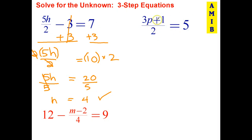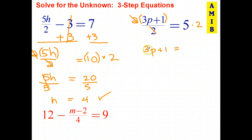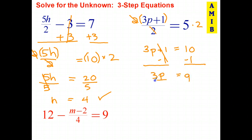Looking at this equation: because I've got an addition in the numerator, the first thing I have to do is put in the implied brackets. So I start by multiplying both sides by 2. They cross out, leaving 3p plus 1. I don't need to write the brackets because this is no longer in a fraction. 5 times 2 is 10. Subtract 1 from both sides, and that leaves me with 3p equals 9. Divide both sides by 3, and p equals 3. Quick check: 3 times 3 is 9, plus 1 is 10, 10 divided by 2 is 5. And that does check.